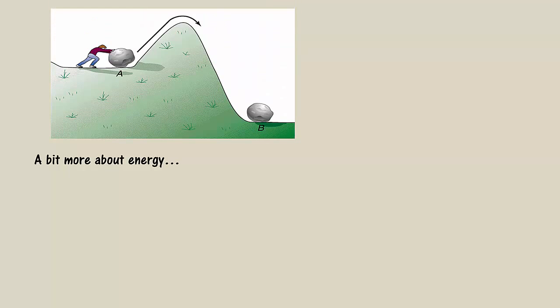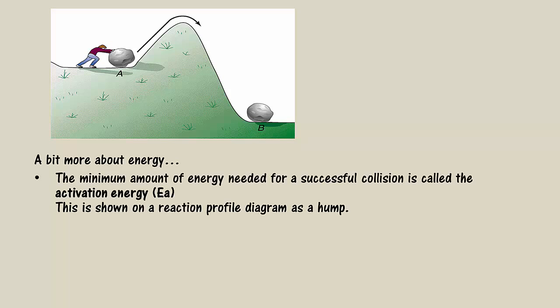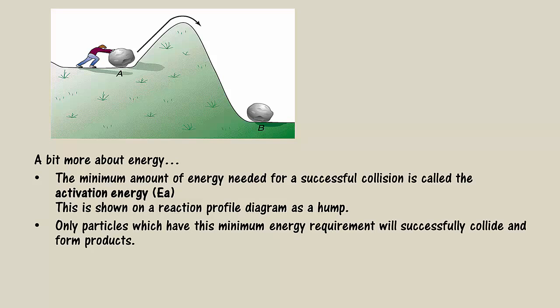A bit more about energy. This diagram shows the relative energy you need to push a rock from position A, which represents the reactants, to position B, which represents the products. But first, you've got to go over the hump. This hump represents the amount of energy called the activation energy. This is the minimum amount of energy needed for a successful collision to occur. Only particles that have this minimum energy requirement will successfully collide and form products. Note, there is a misconception here. The activation energy barrier cannot be reached. You either have the minimum energy to overcome the barrier, or you don't. You can't reach it. So don't use the word reach in your responses.